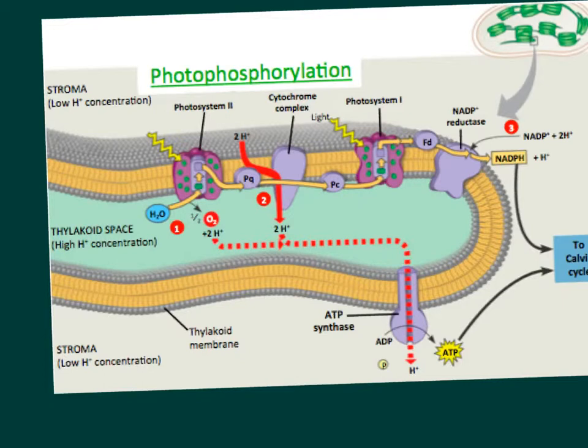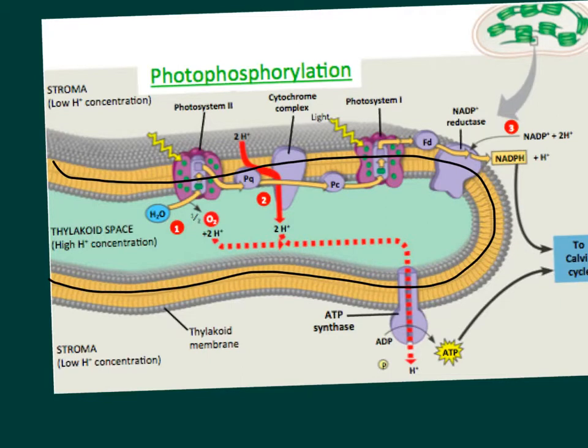So if we talk about where the light reactions occur, inside the thylakoid membrane. And so now if you look at what I've got here, this is just a picture I've copied. So all of this is just the membrane of a thylakoid itself. So we've got the thylakoid space inside, and we've got the stroma outside.